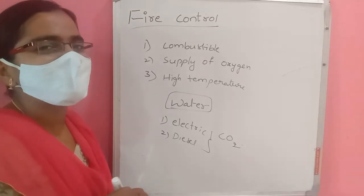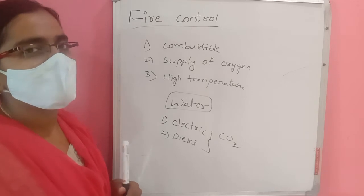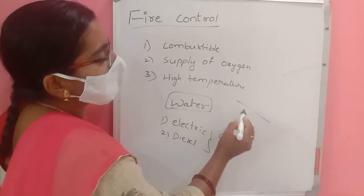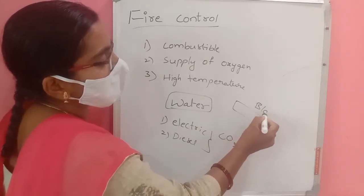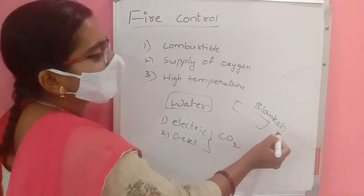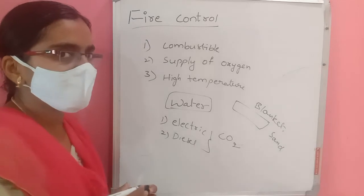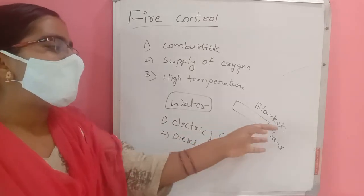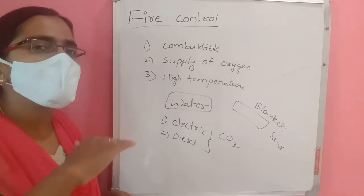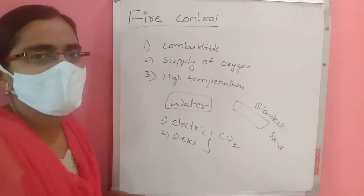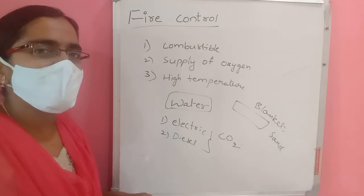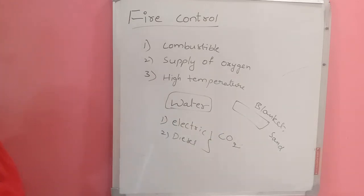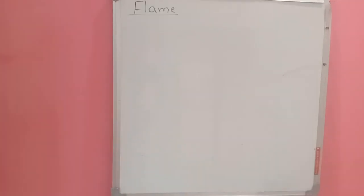If a person's clothing catches fire, we can cover the person with a blanket or pour sand over the flames. The blanket or sand stops the interaction between oxygen and the flame — with no oxygen supply, the burning automatically stops. That is why we use blankets and sand for fire control in such situations.